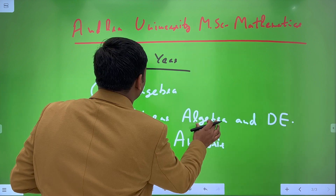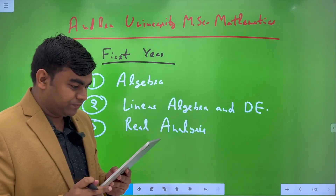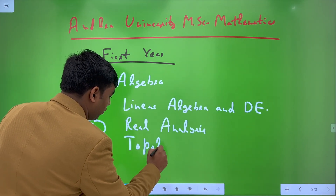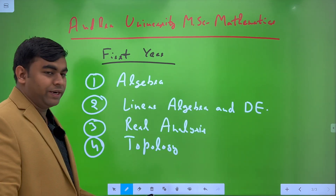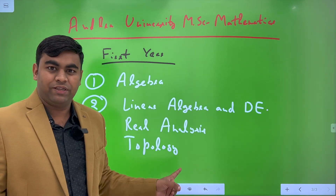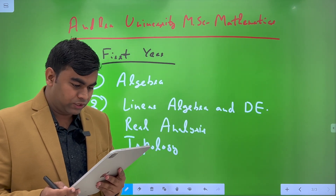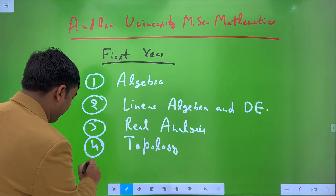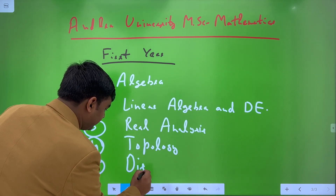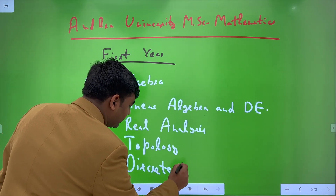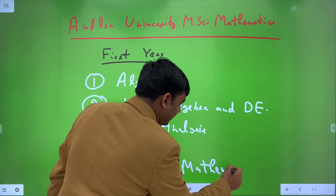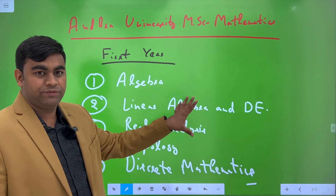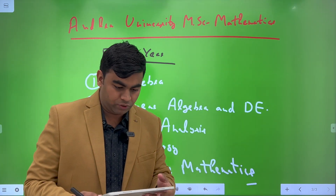Paper 4 is Topology — MSc Mathematics first year. We are providing a special video course dedicated to MSc Mathematics Topology with notes. The last paper in MSc Mathematics first year is Discrete Mathematics. For almost all subjects in MSc Mathematics first year, we are providing notes, assignment solutions, and video lectures according to your syllabus for the first four papers.